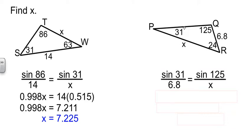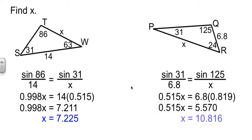Sine of 31 is to 6.8, as sine of 125 is to x. Cross multiply, doing the trig as I go in my calculator. Clean up, and divide.